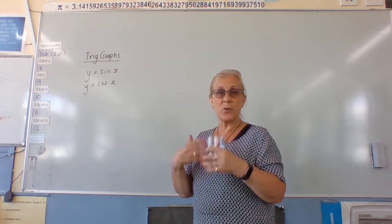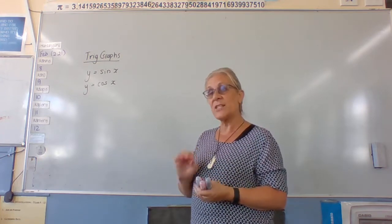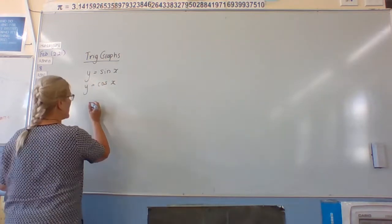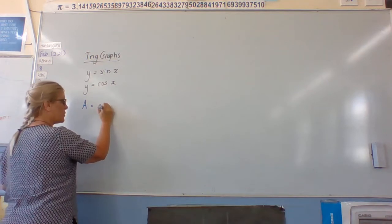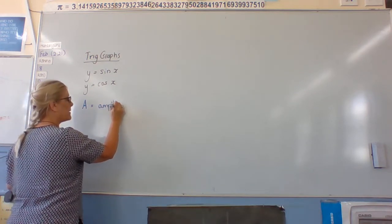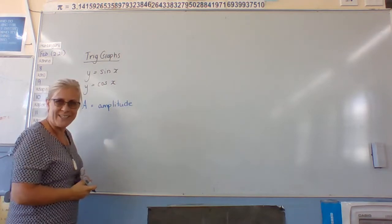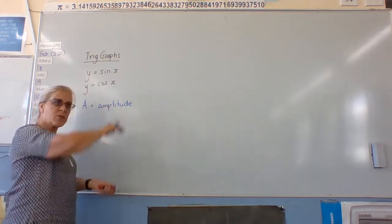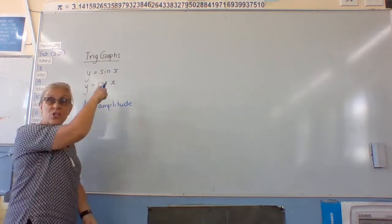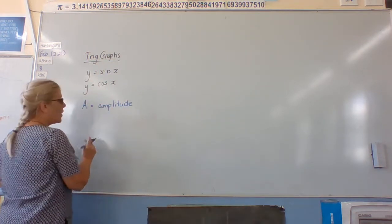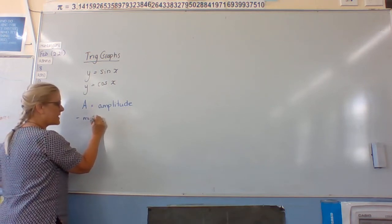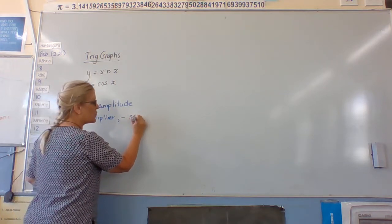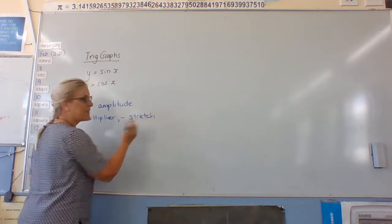We can dress these up into a really fancy formula, but we're just going to start with finding what we call a. A equals amplitude — not attitude, amplitude. Amplitude means the vertical stretch of the graph. We're going to call it a multiplier because that's where it sits, out front of the equation. It goes and stretches the graph.